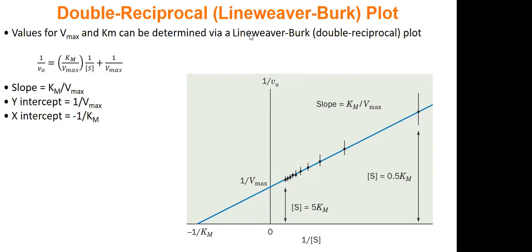Anyways, back to Lineweaver-Burk. The whole point of this is to make your curve into a line, because once it's in a line, you have this. You have Y equals MX plus B. That's your equation of a line. So what can we get from this? Well, if you have your kinetics equation in a line, you can get Vmax easily enough, because that is your Y intercept.